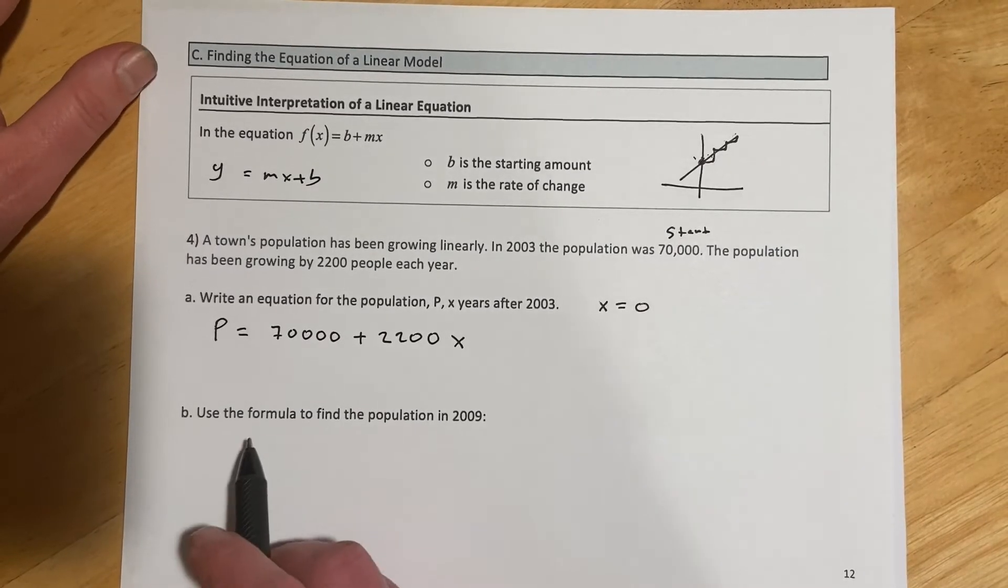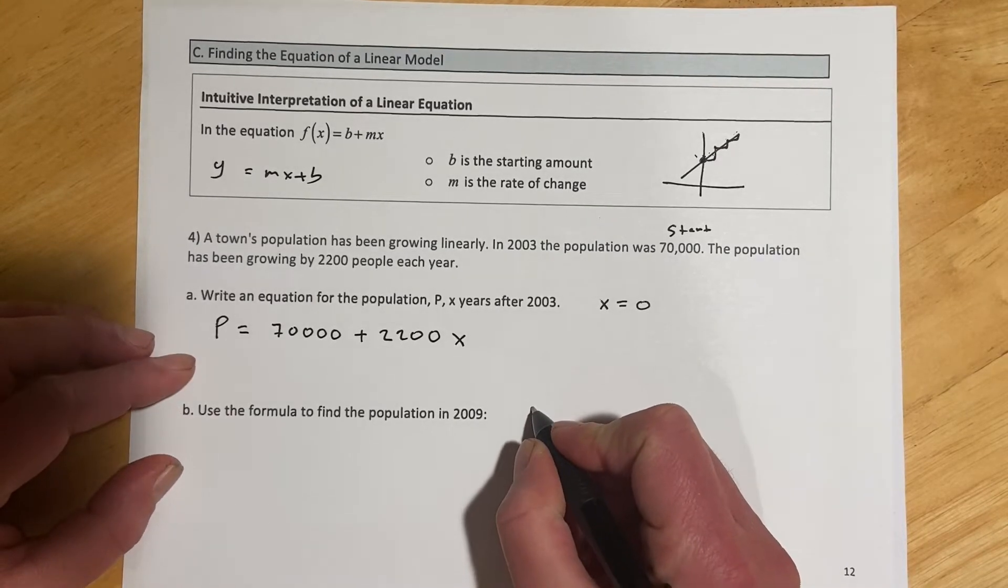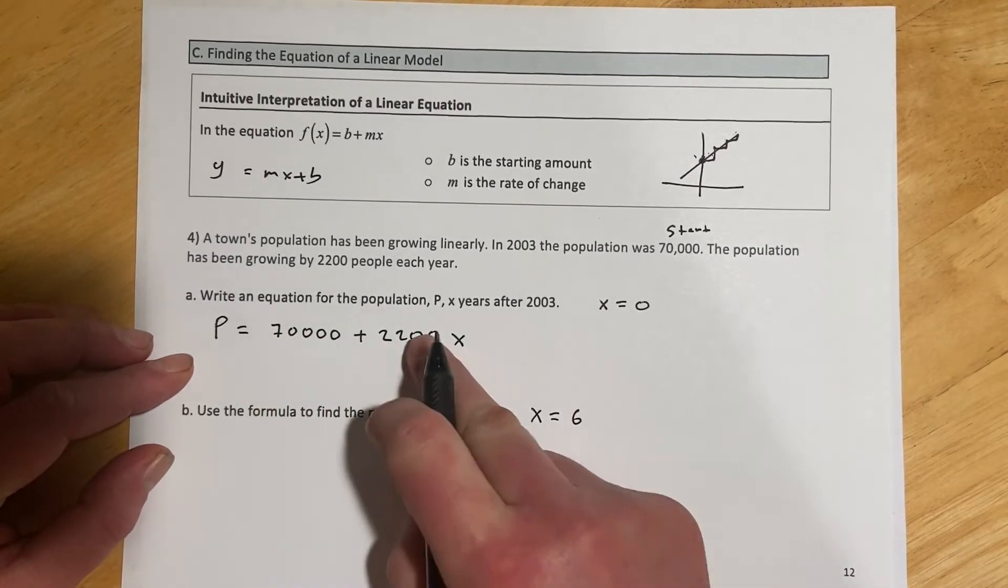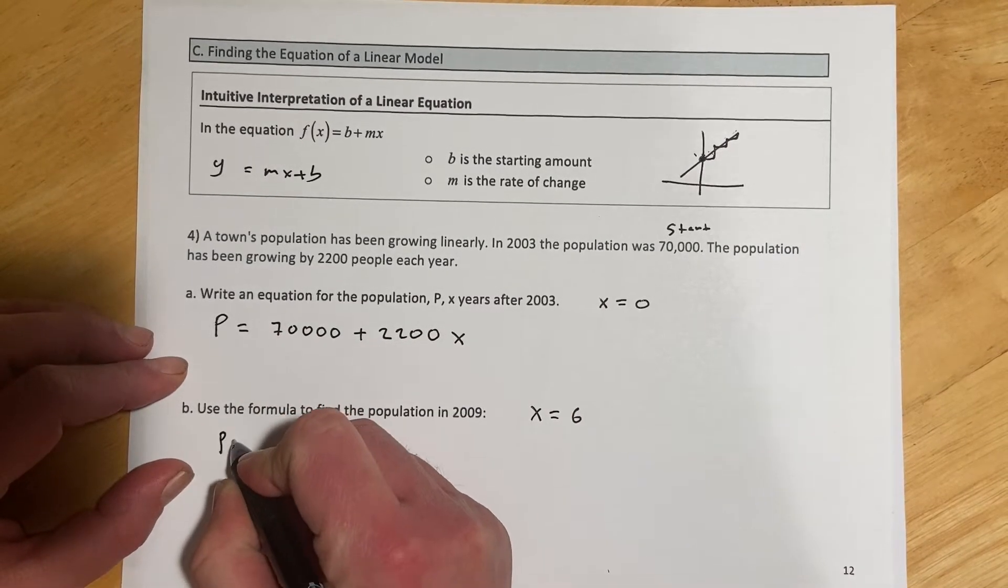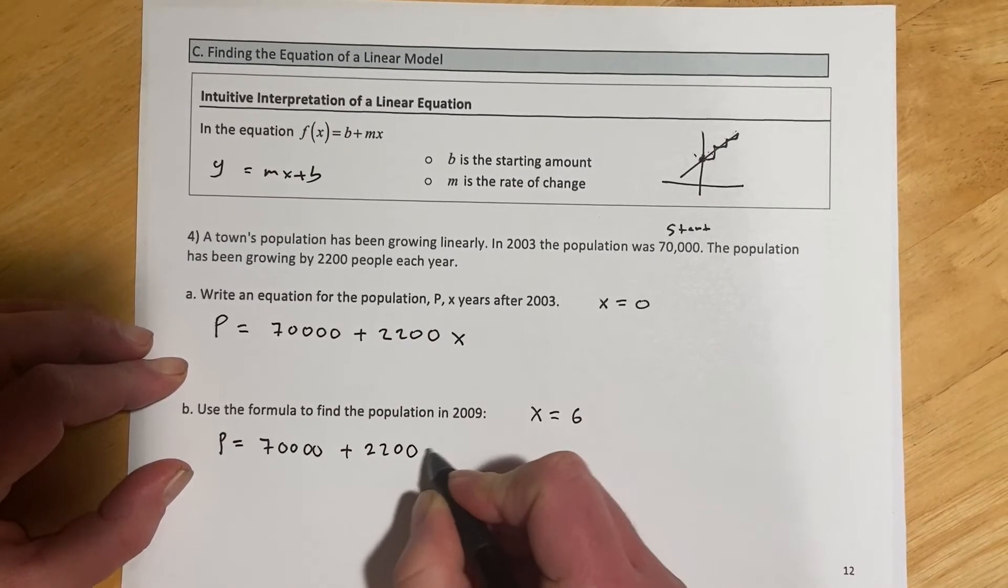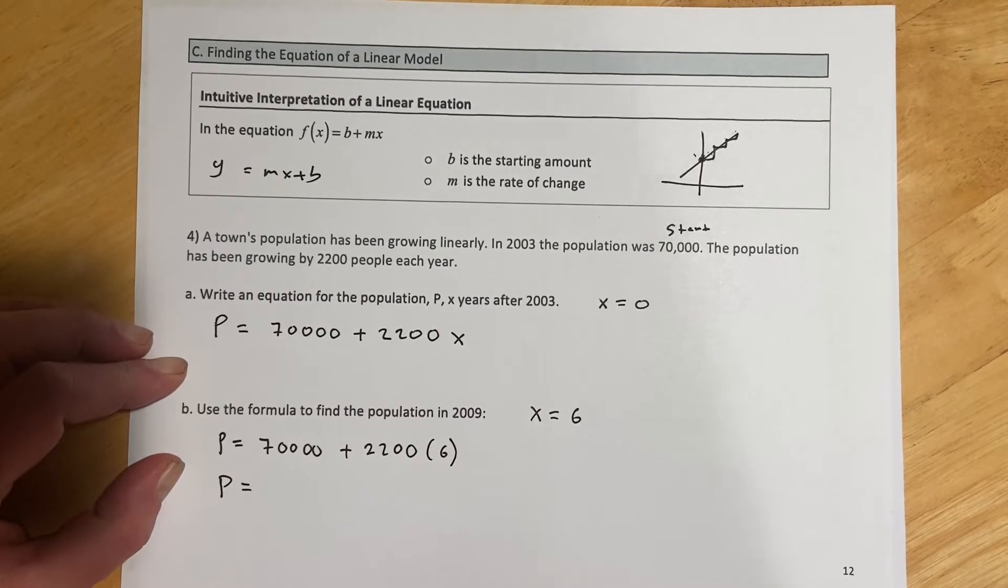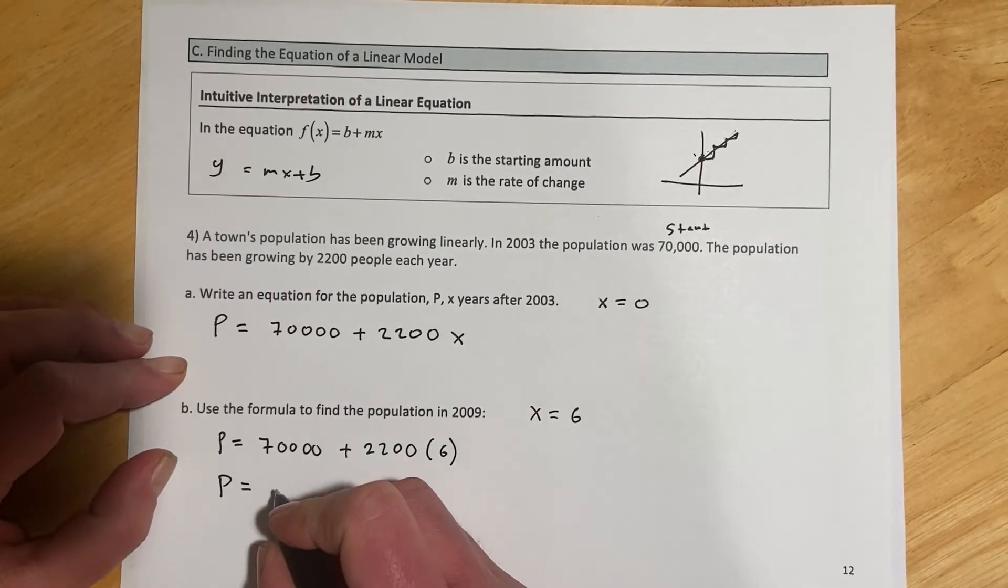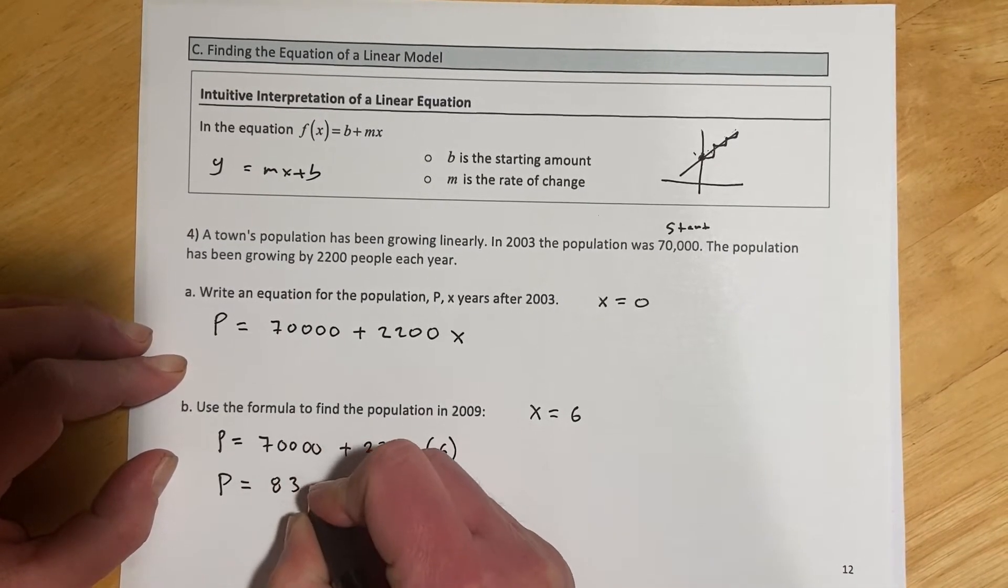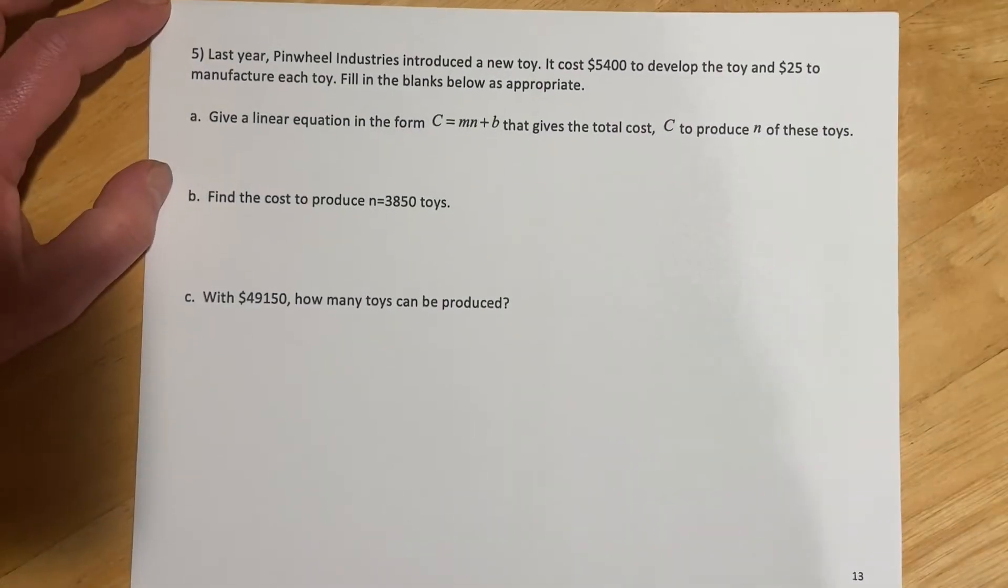And then for part B, we're supposed to use the formula to find the population in 2009. So 2009 would be x equals 6 because that's 6 years after 2003. So we're just going to put 6 in here. So our population would be 70,000 plus 2,200 times 6 years of growth, and we add those two together. And I got p to be 83,200.